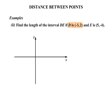So D (-3,2). So negative 3, 3 to the left. And 2 up. There's our point D. E has coordinates (5,-4). Meaning 5 across. And 4 down. There's our point, our point E. We draw the line connecting that. So the interval there. We need to find the length.